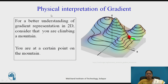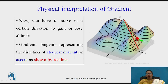To explain gradient with a diagram: imagine you are at a point on a hill and you want to move uphill or downhill. If you want to gain altitude you move upward, if you want to lose altitude you move down. The gradient represents the direction of steepest descent or ascent, shown by the red line in the diagram. This is the meaning of gradient in the real world.